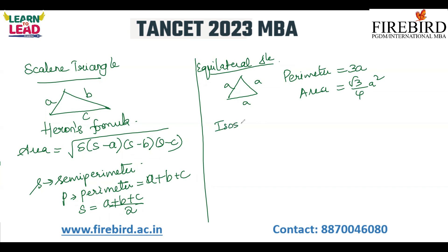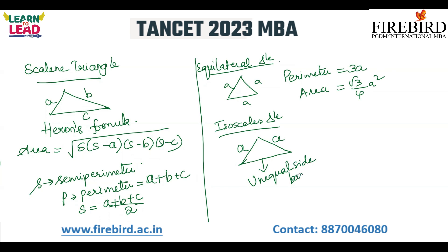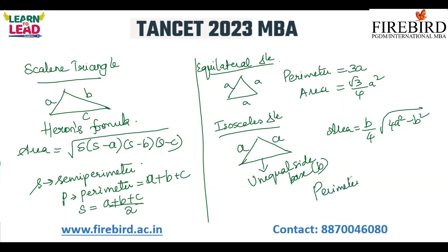Then the isosceles triangle. What about an isosceles triangle? Two sides are equal. The unequal side we call the base B. Area is equal to b divided by 4 into the square root of (4a squared minus b squared). And the perimeter of an isosceles triangle is 2a plus b.